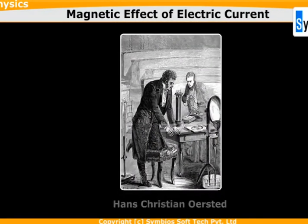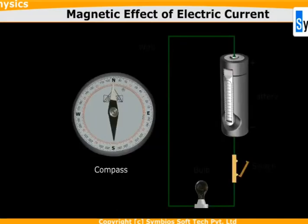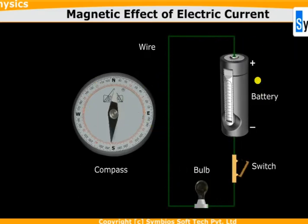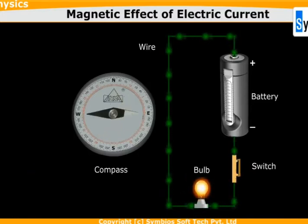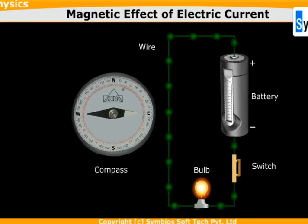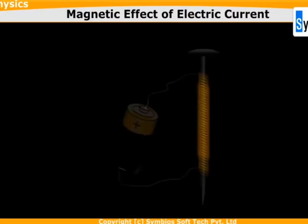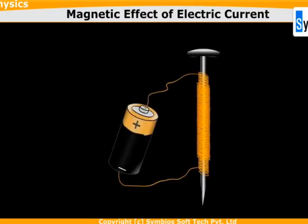Scientist Hans Christian Oersted demonstrated an experiment showing that if a compass needle is placed near a wire through which current is passing, the magnetic needle gets deflected in a particular direction. How much the magnetic field deflects depends upon the value of current flowing through the circuit.